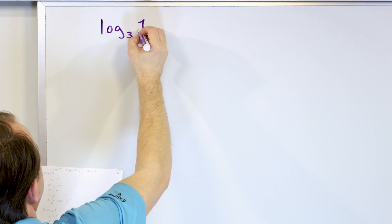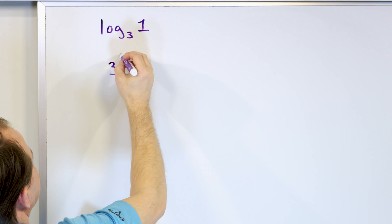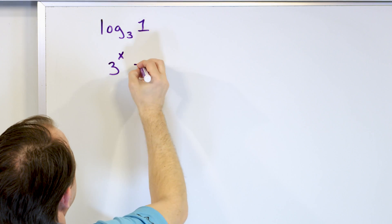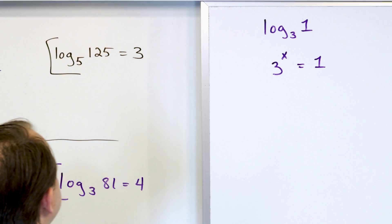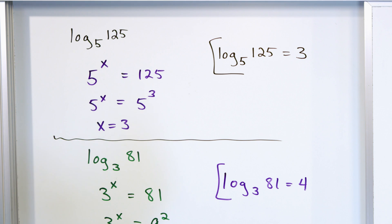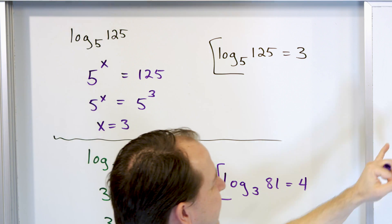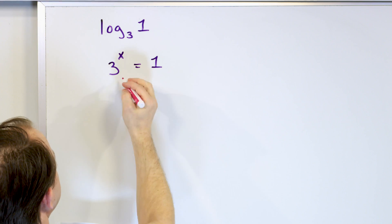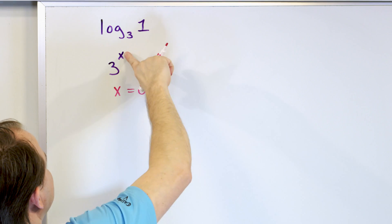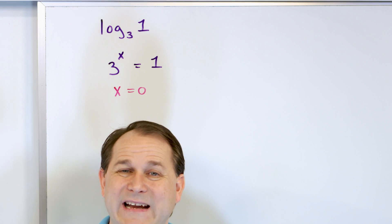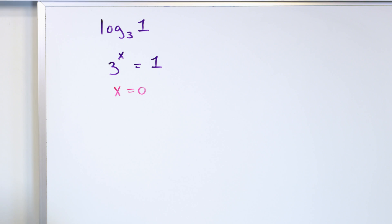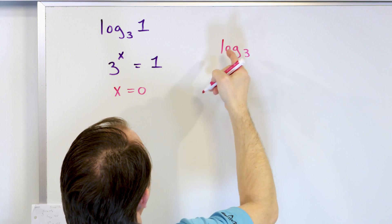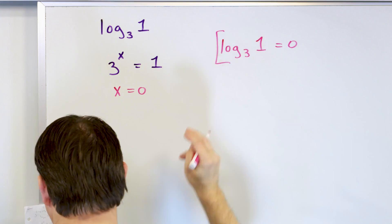Let's do a much easier problem: logarithm base 3 of the number 1. You translate it the same way — 3 raised to the power of something equals 1. You can't get the bases to look the same here, but you remember that anything to the 0 power is equal to 1. So 3 to the 0 is 1. When an exponent is 0, it always evaluates to 1. So logarithm base 3 of 1 is equal to 0.